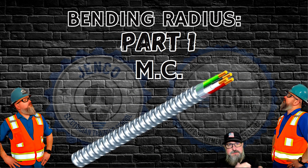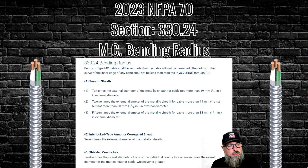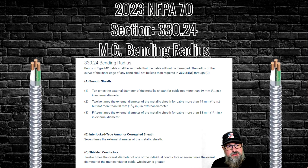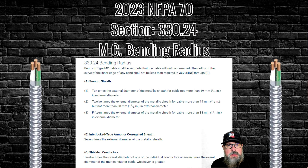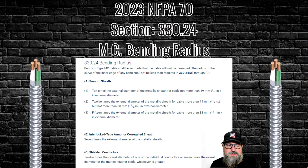This is going to be a two-parter — I'm splitting it up so you're not watching a 30–40 minute video. Part one is about MC. NEC 330.24 states: bends in type MC cable shall be made so that the cable will not be damaged. The radius of the curve of the inner edge of any bend shall not be less than required in 330.24 A through C. What we mostly deal with in the field is B — interlock type armor or corrugated sheath — which is seven times the external diameter of the metal sheath.